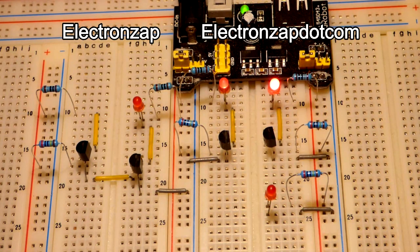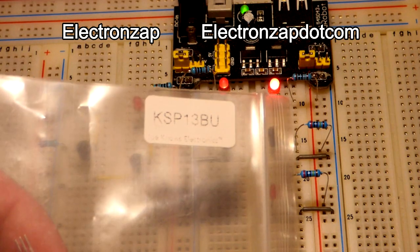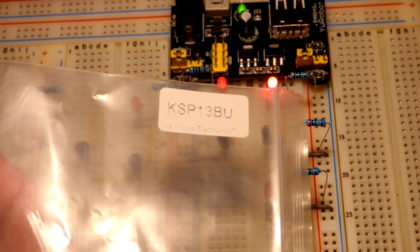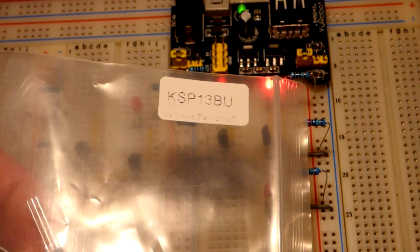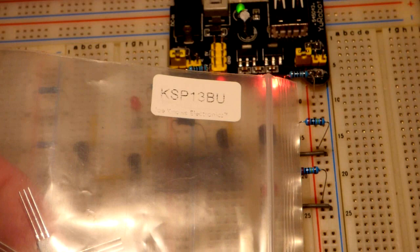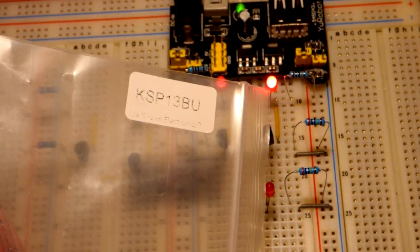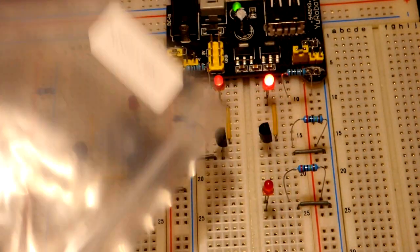So now in this video we're going to look at a Darlington pair transistor that I have. It's the KSP-13BU. The BU means it's some kind of variant, but the data sheet I found didn't cover what that BU means. So it must have been from a different manufacturer. But in any case, it's the KSP-13. You can look up the data sheet for it.